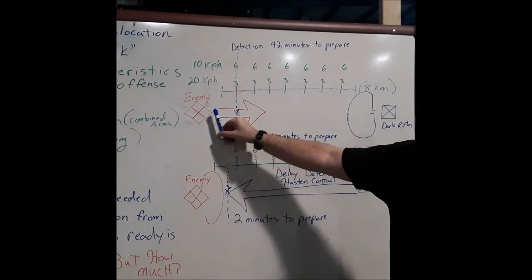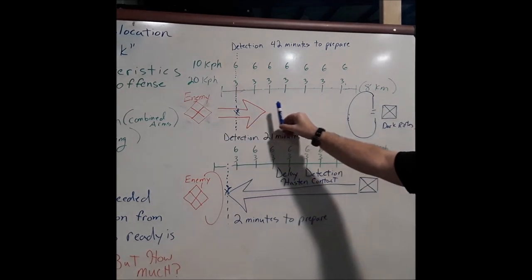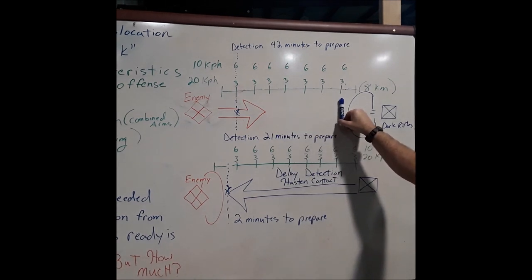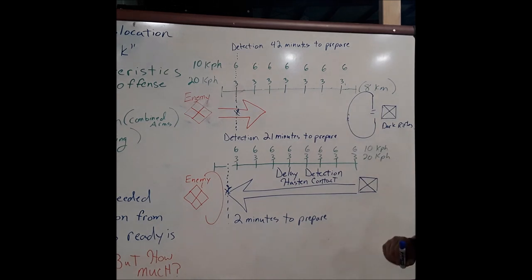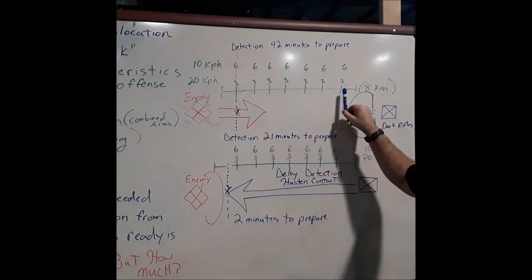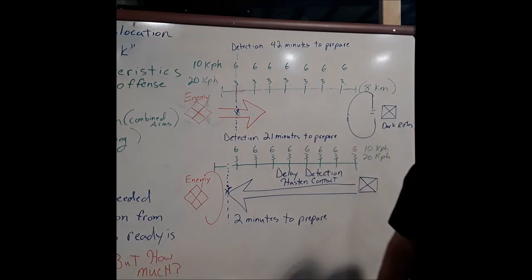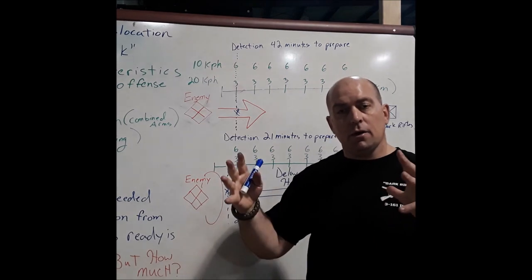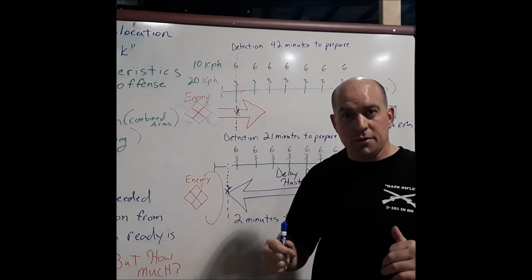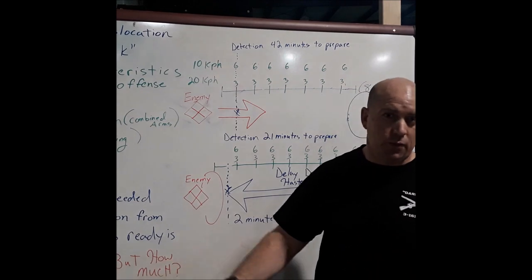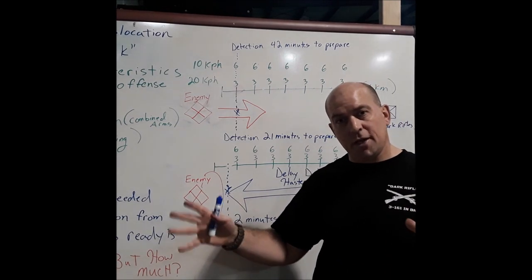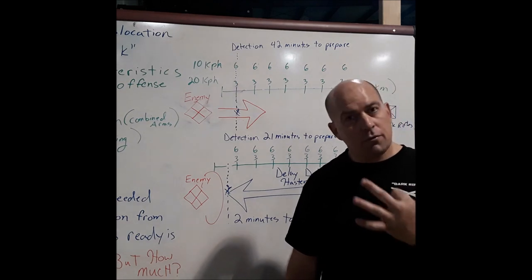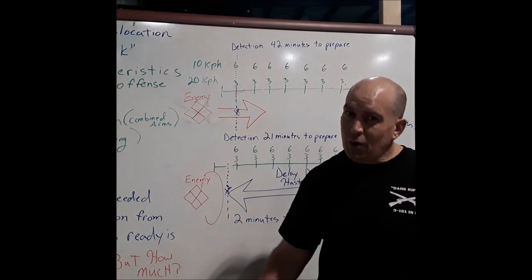But this doesn't really matter if the enemy makes its approach undetected. Let's say they're not detected until they're one kilometer out. That would mean we have three minutes to transition from all the things in our operations life cycle — planning, rehearsing, refitting, reorganizing — and transition from that state into a ready-to-fight condition. Three minutes. Probably not enough time.